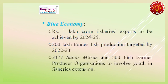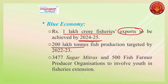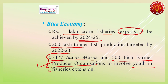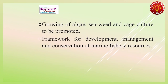Blue economy basically talks about the oceanic or marine ecosystem. Three very important targets: first, 1 lakh crore fisheries export will be achieved by 2024-25; second, 2 lakh tons of fish production will be targeted by 2022-23; third, 3,477 Sagar Mitras and 500 Fish Farmer Producer Organizations will involve youth in fisheries expansion. These numbers and targets are very important — UPSC does not change these numbers.